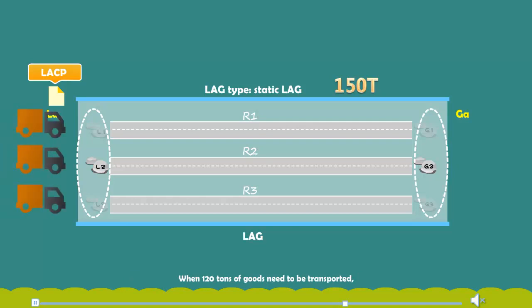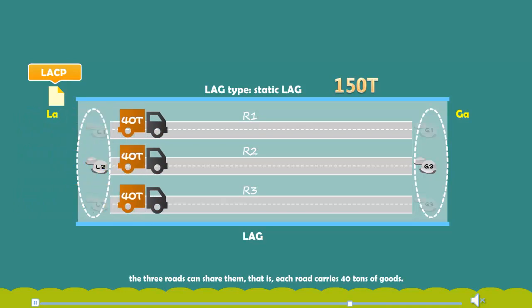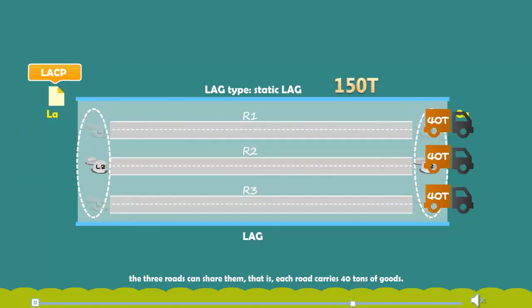When 120 tons of goods need to be transported, the three roads can share them. That is, each road carries 40 tons of goods.